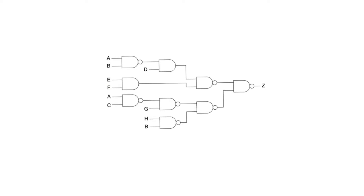Let's look at another example of a static hazard which occurs in a circuit with a very large number of logic inputs, meaning that we cannot use the Karnaugh map approach towards solving it. In this case, we are given the circuit and we are required to identify the number and kinds of static hazards that can occur — just static hazards, not dynamic. We have to identify which variables are responsible and what kinds of hazards may occur, then solve them.